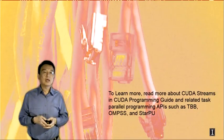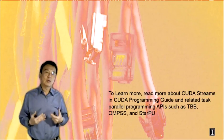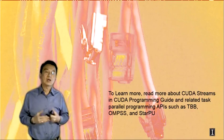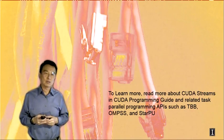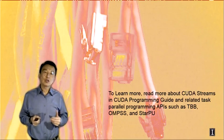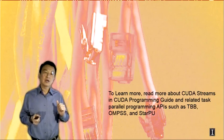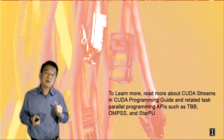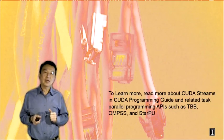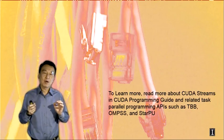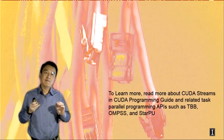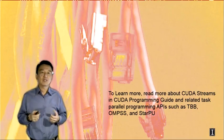In the next lecture, we will go into practical considerations and host code that makes use of streams. If you'd like to learn more, I encourage you to read about CUDA streams in the CUDA programming guide, and also read up on related task-parallel programming APIs such as Thread Building Blocks, OmpSS, and StarPU. These are much more elaborate programming APIs than CUDA in terms of managing tasks, assigning proper priorities, and handling dependencies in a more sophisticated way. Thank you.